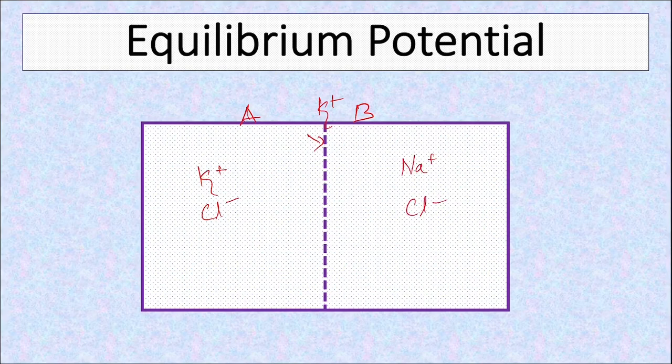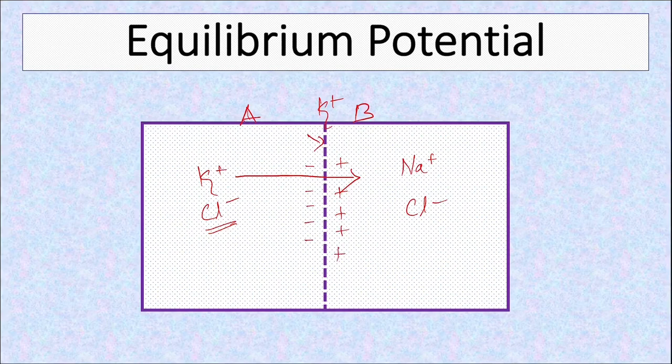Since the only ion permeable is potassium, potassium moved down its concentration gradient without being accompanied by the negative ion chloride. So there will be excess positive charge over here and excess negative charge here. They are not electroneutral anymore, and this electrical gradient increases till it becomes strong enough to oppose the movement of potassium itself.